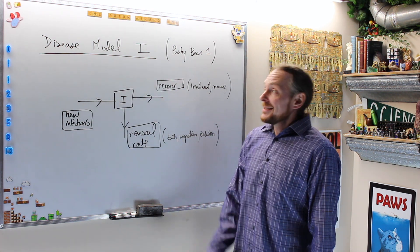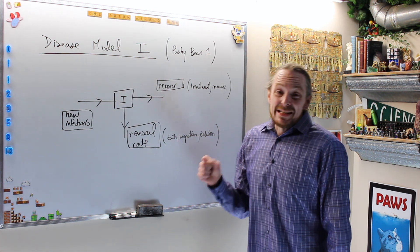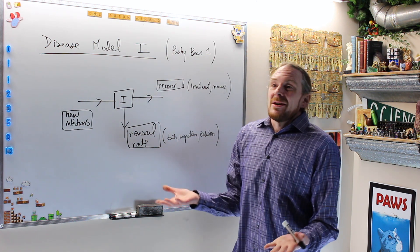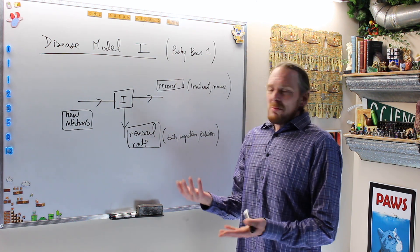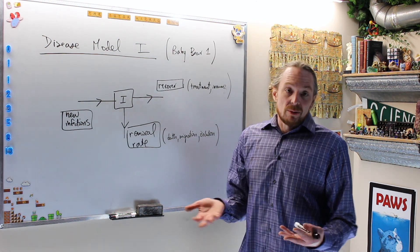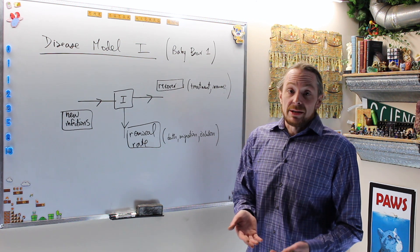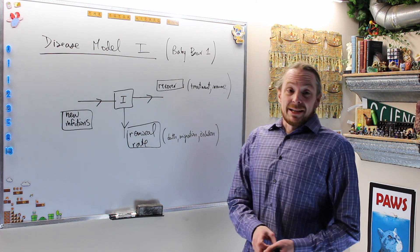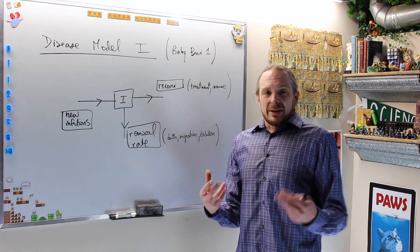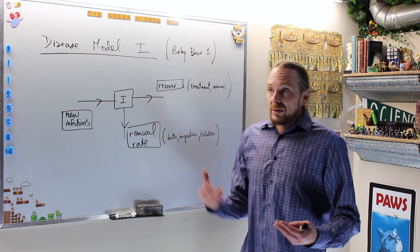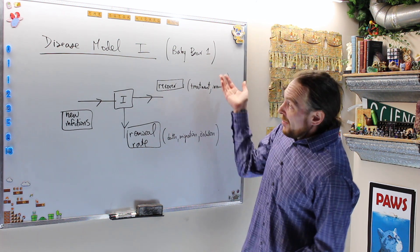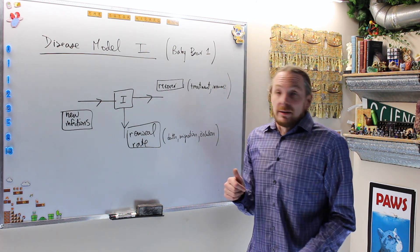What we're going to do today is Disease Model 1. We're going to do a series on how to model the spread of infectious diseases through a given population. We're going to get more and more details as we go along, with more and more realistic models. So we're going to start with Model 1 — Baby Bear Model 1.